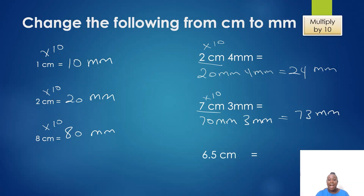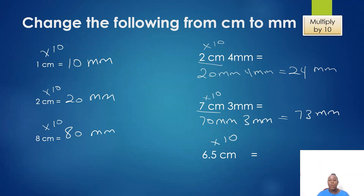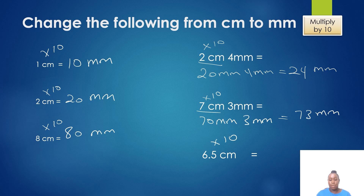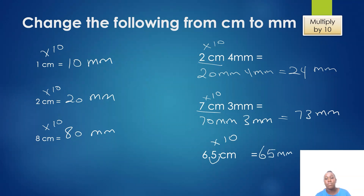Let's do one more like this. I have 6.5 centimeters and I would like to change it to millimeters. What do I do? I multiply 6.5 by 10. What happens when we are multiplying by decimals? We shift the point to the right. I am multiplying by 10, so I have one zero and I'm going to be shifting my decimal point once to the right, giving me 65 millimeters.